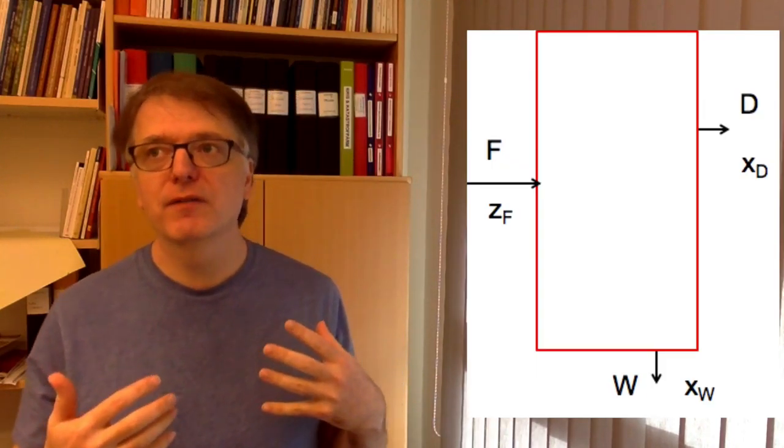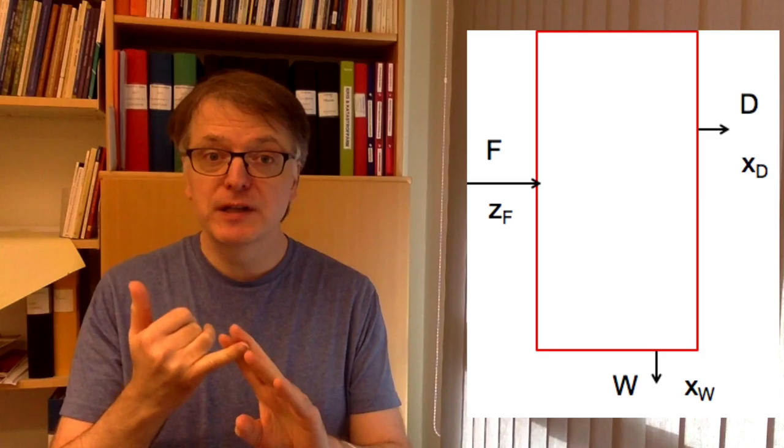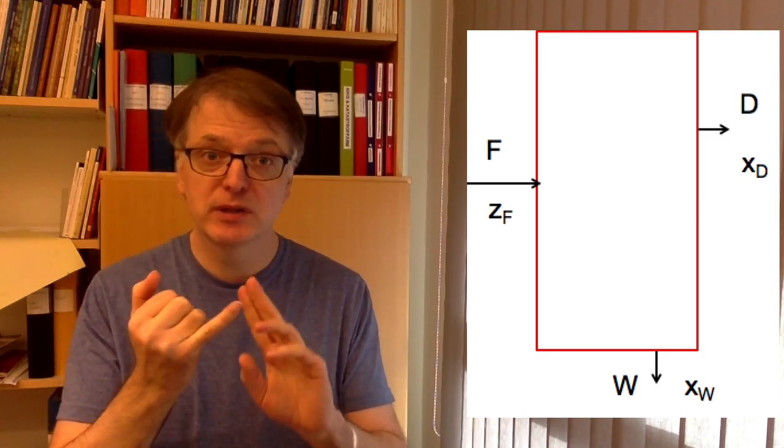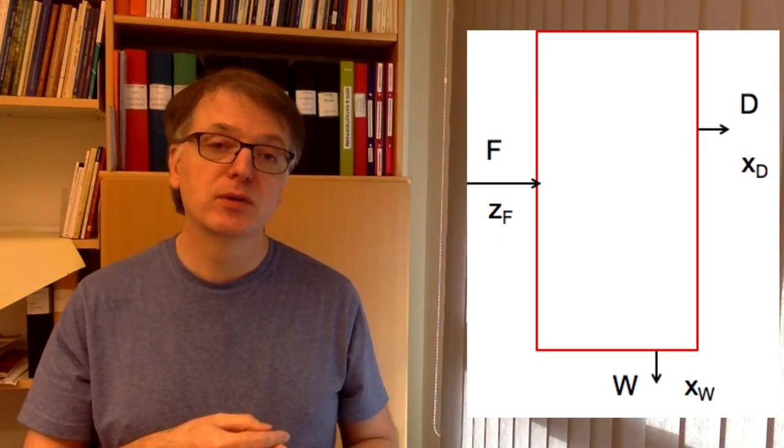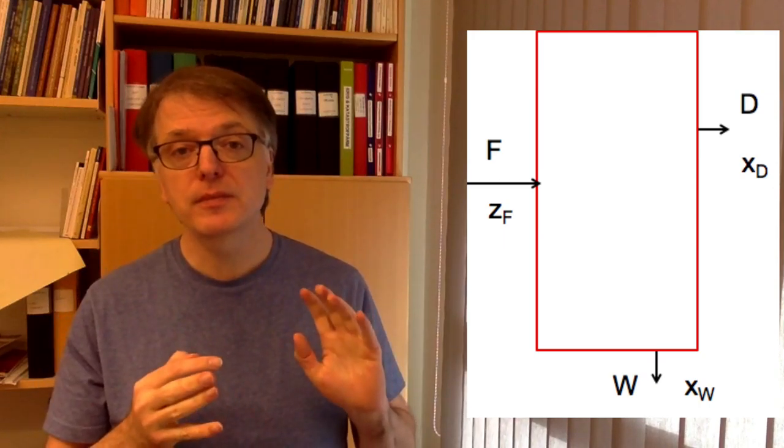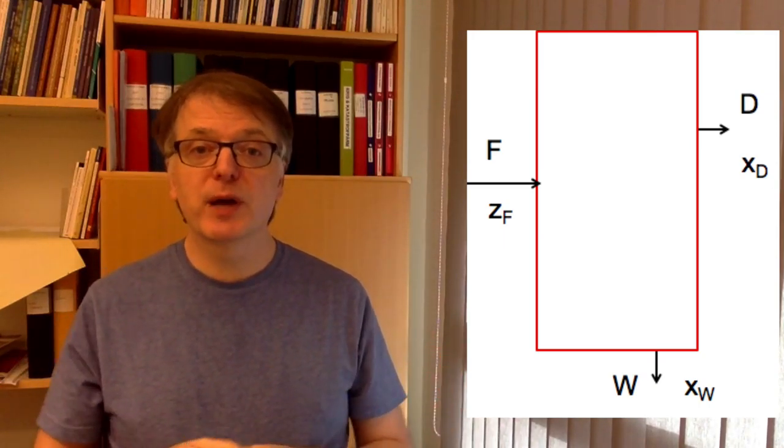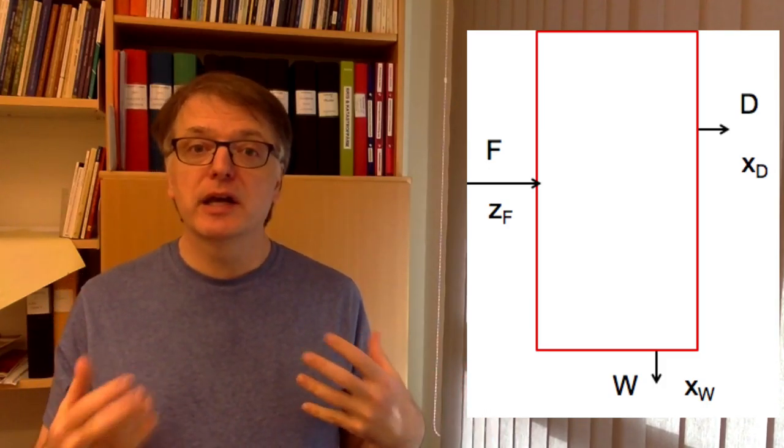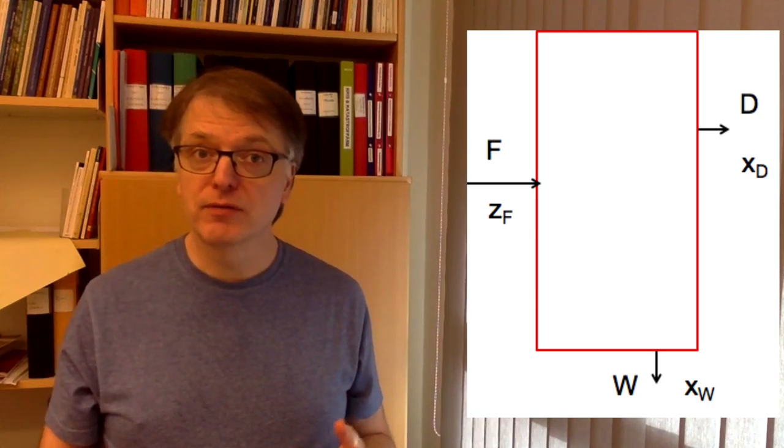We will focus on continuous distillation. So we will have three flows: a feed, a distillate, and the bottoms product. We will use F, D, and W to denote those three. So we have moles per second in and moles per second out. F, D, and W are then the total flows.